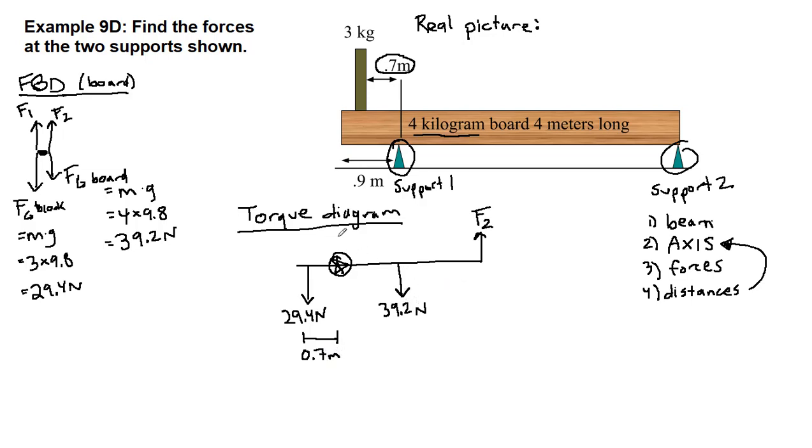For the weight of the board, we're trying to get the distance between the support and the weight of the board. The force of gravity is acting right in the center of the board. It would be two meters from either end. But because this support is already 0.9 meters away, this will be 1.1 meters between where the axis is and where the force of gravity is located.